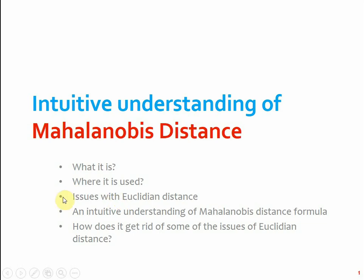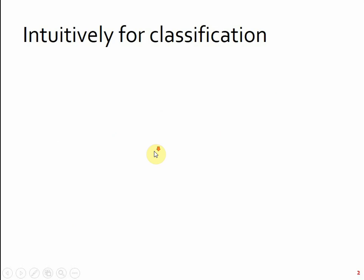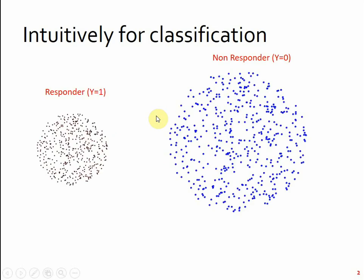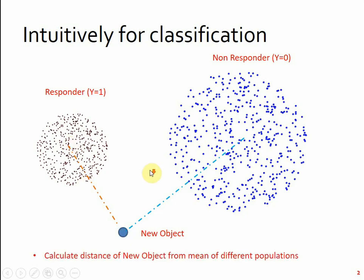Let's first start with where it is used. In classification problems, usually you have two classes, non-responder and responder. When any new object or new instance comes, you try to measure its distance from the center of responder as well as from the center of non-responder, and wherever it appears closer, you say that this new object has a high possibility of becoming this class. That's what you try to do theoretically.